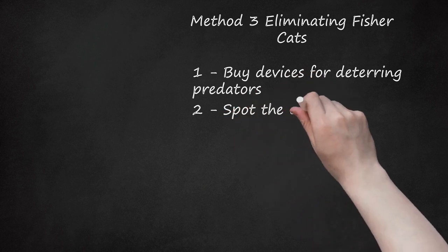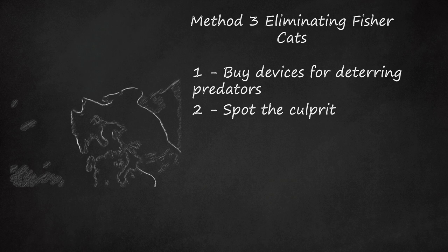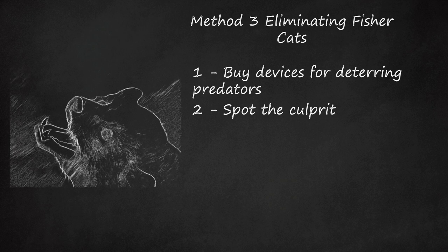Step 2: Spot the Culprit. What exactly is a fisher cat, and how does it differ from, say, a house cat or a raccoon? They are relatives of the marten. They aren't really cats at all. Fisher cats are also called pecan cats or black cats. They are large, dark-colored, and furry. Technically, they belong to the weasel family.